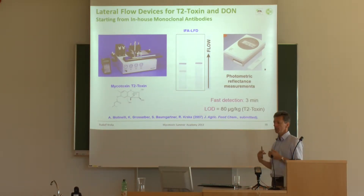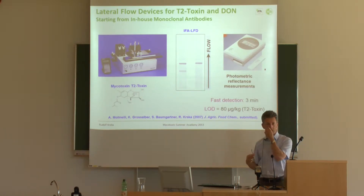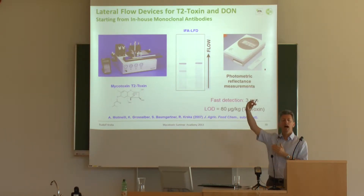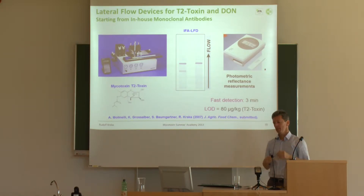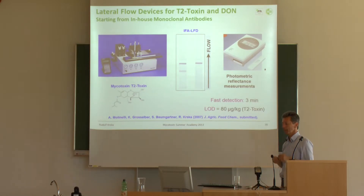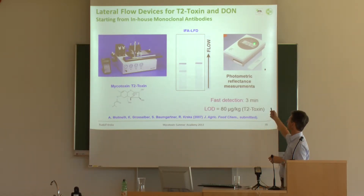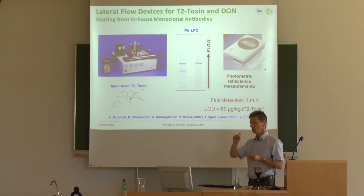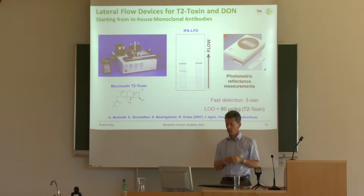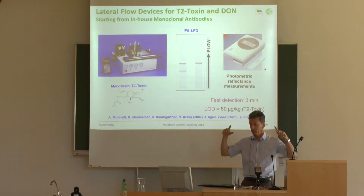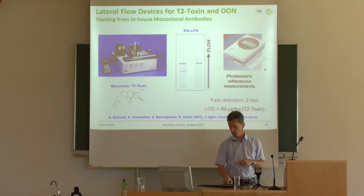All competitive assays show a somewhat confusing result: high signal means low concentration, and low signal means high concentration. This can however be integrated in a photometric reflectance measurement device which gives you a semi-quantitative value for a certain mycotoxin.